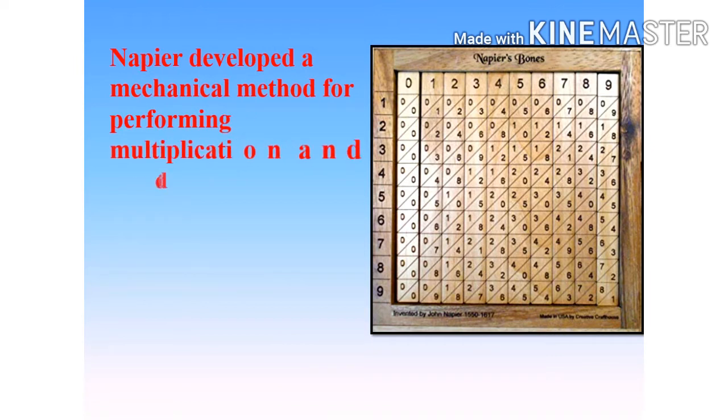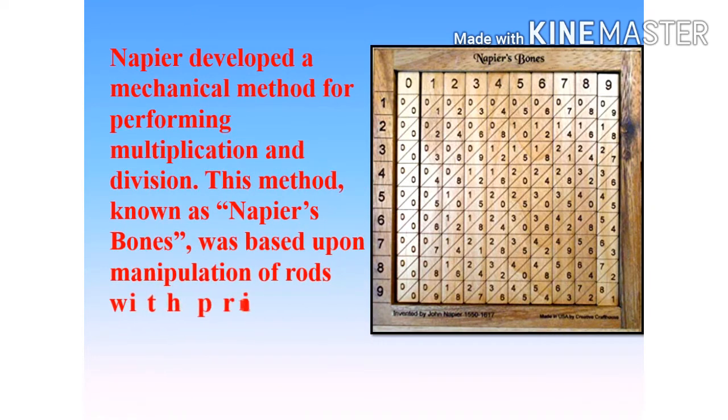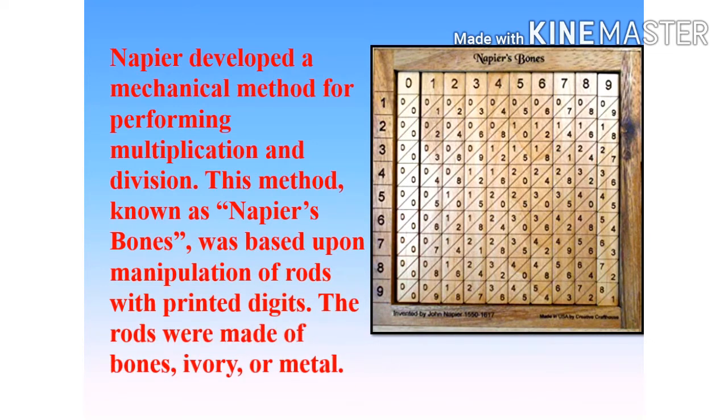Napier developed a mechanical method for performing multiplication and division. This method, known as Napier's bone, was based upon manipulation of rods with printed digits. The rods were made up of bones, ivory, or metal.